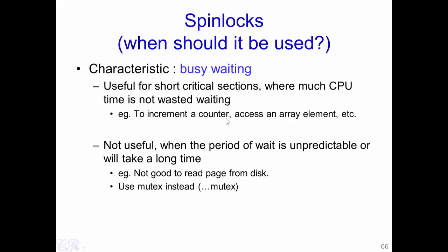Even if another process is accessing the counter, we are certain it will not spend too much time incrementing it, so the waiting process will not waste too many cycles. However, spin locks are not useful when the period of waiting is unpredictable or very long — for instance, if there is a page fault causing a page of memory to be loaded from the hard disk into main memory. In such a case we use a different construct called a mutex.